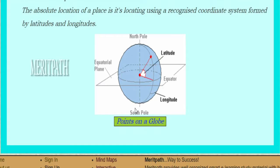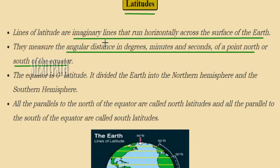Latitudes are imaginary lines that run horizontally across the surface of the earth. These horizontal lines measure angular distances in degrees, minutes, and seconds, or measure a point north or south of the equator.